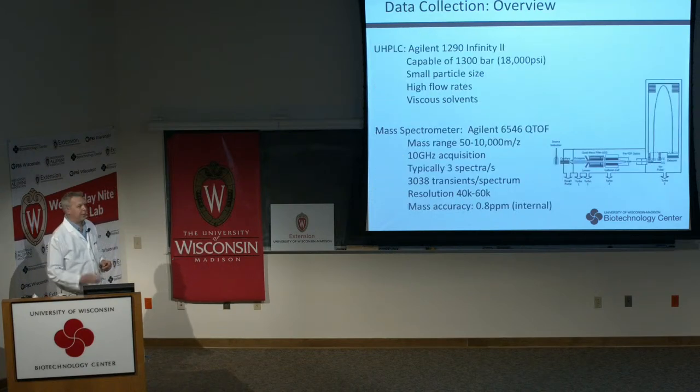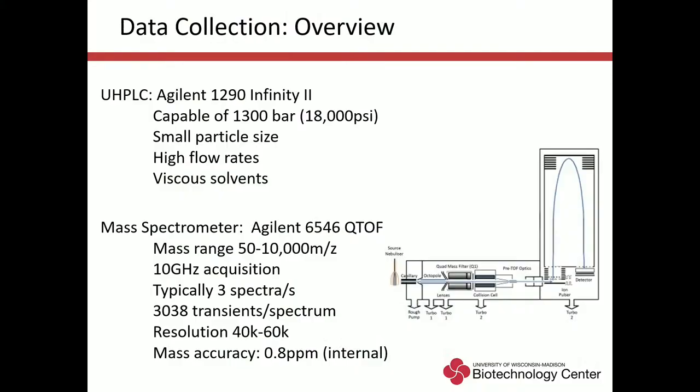Now we've got extracts — time to collect the data. The platform is an Agilent UHPLC, specifically a 1290 Infinity-2 HPLC system capable of 1,300 bar — over 18,000 PSI. That robust pressure allows us to use columns with small particle size, increasing capacity and chromatographic resolution, as well as higher flow rates and more viscous solvents — all highly relevant to lipidomics analysis.